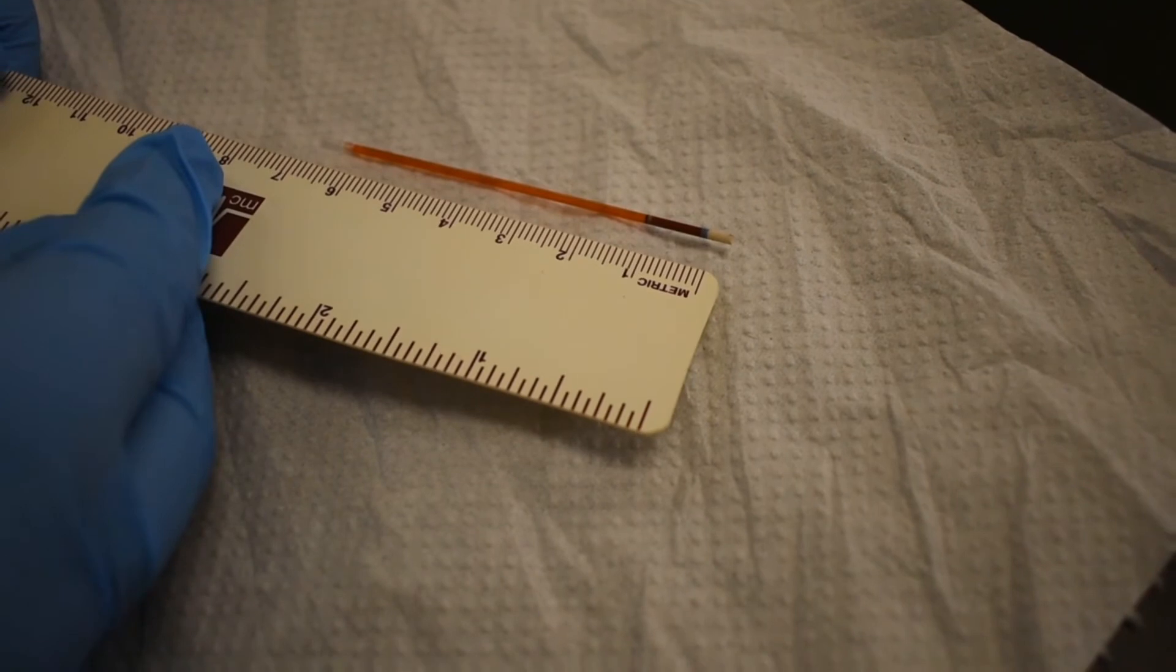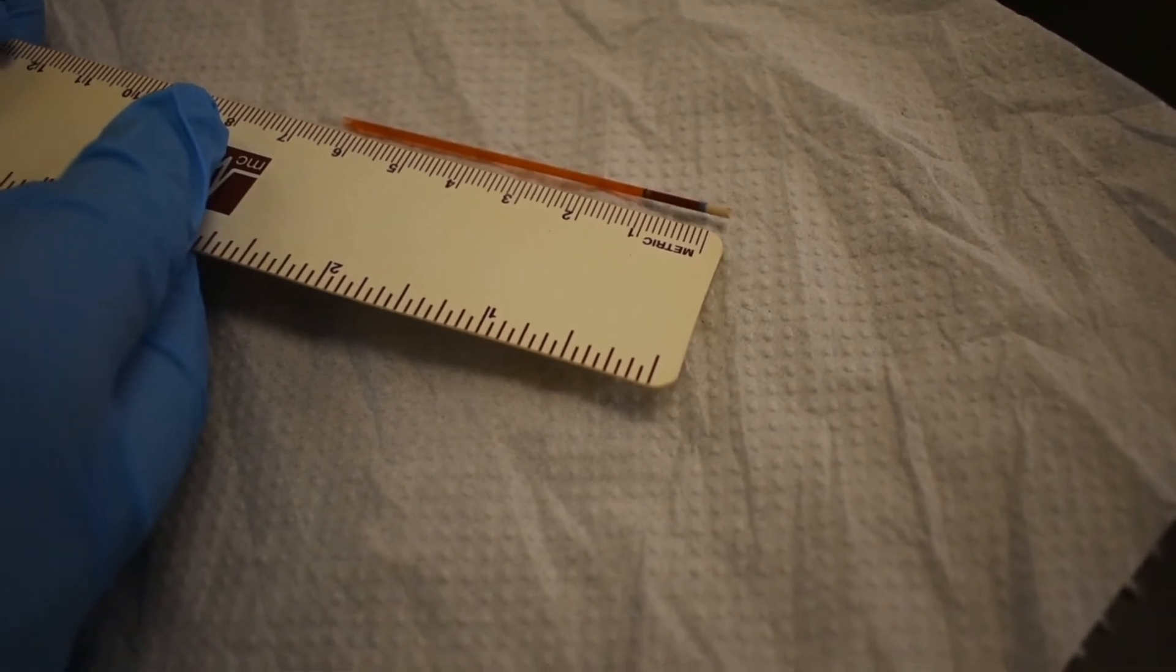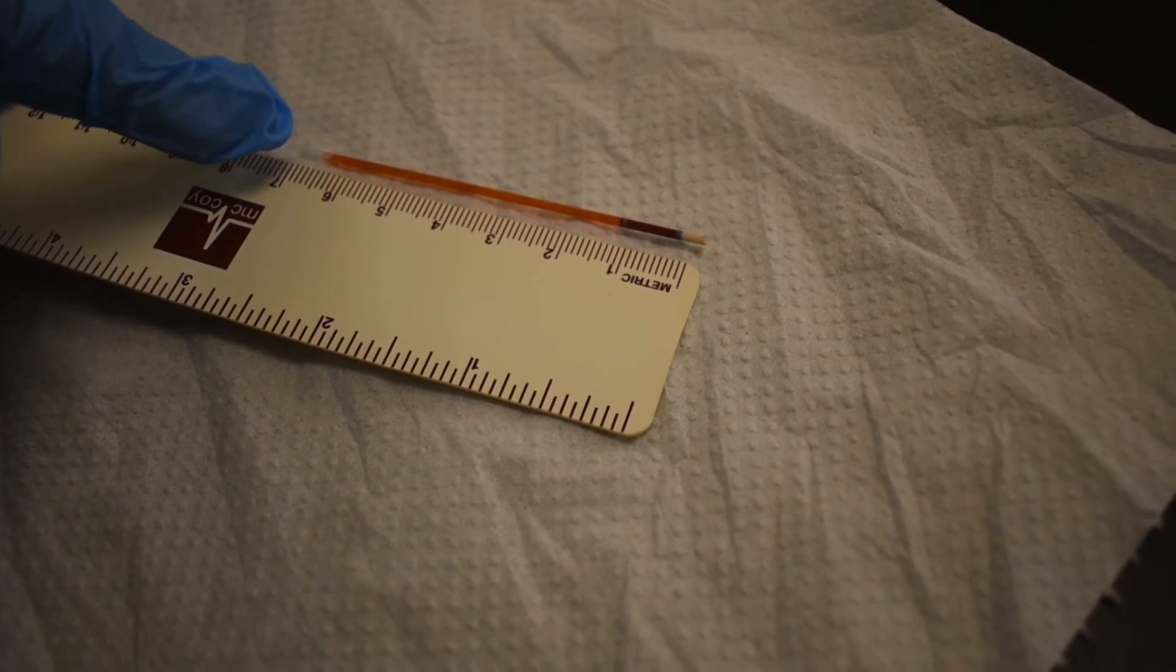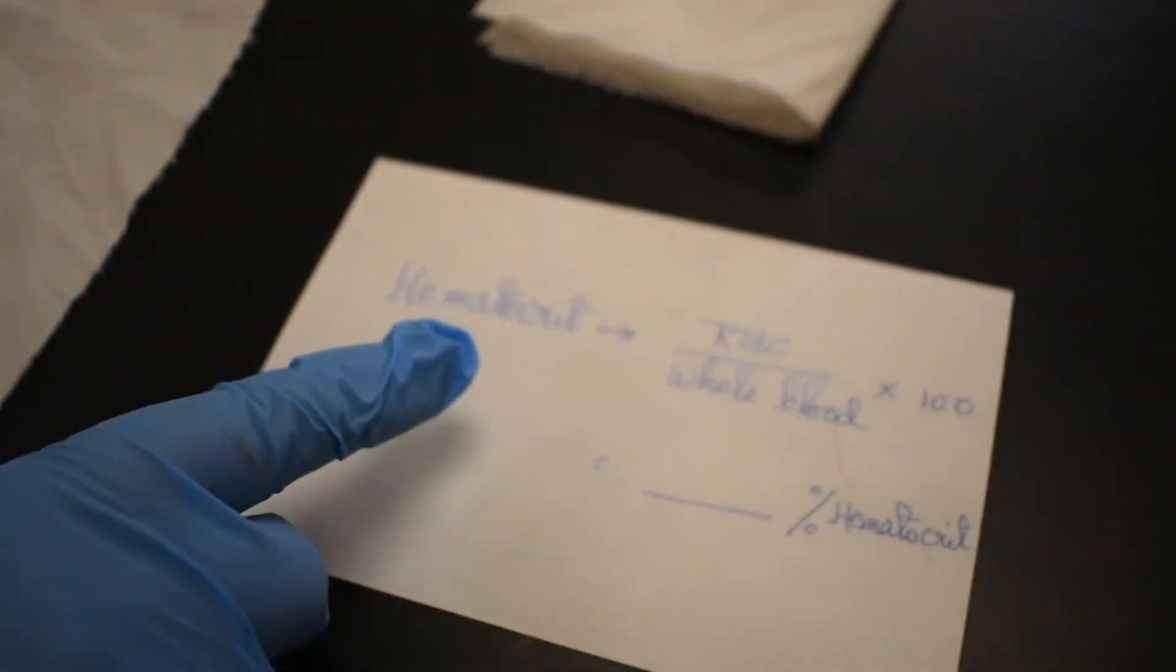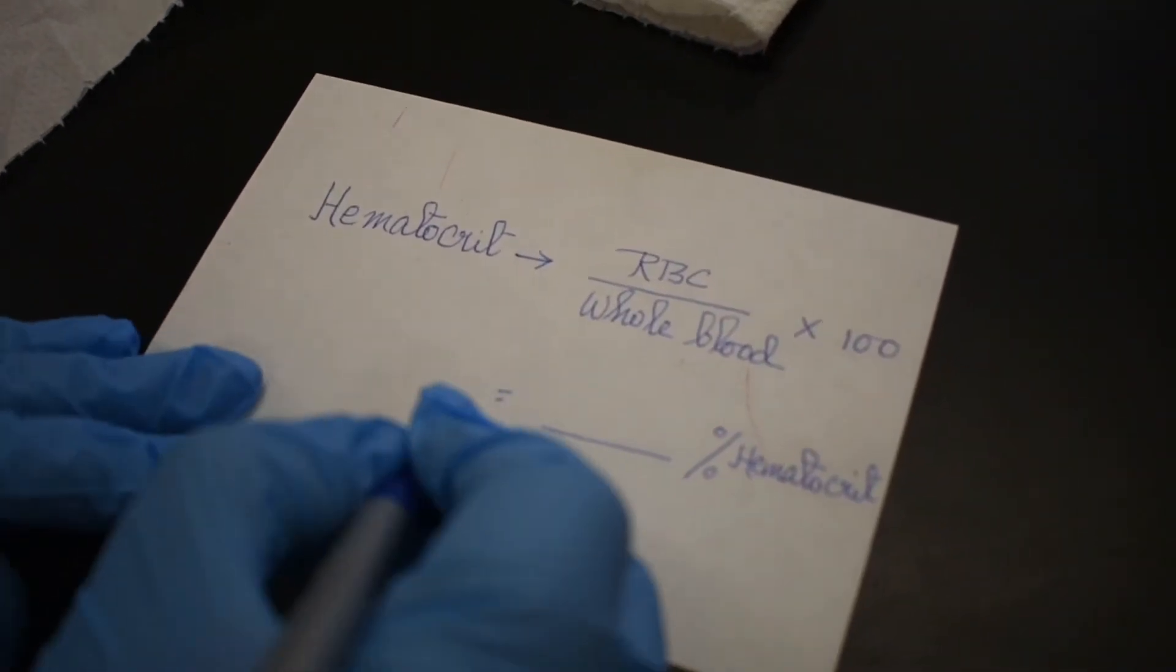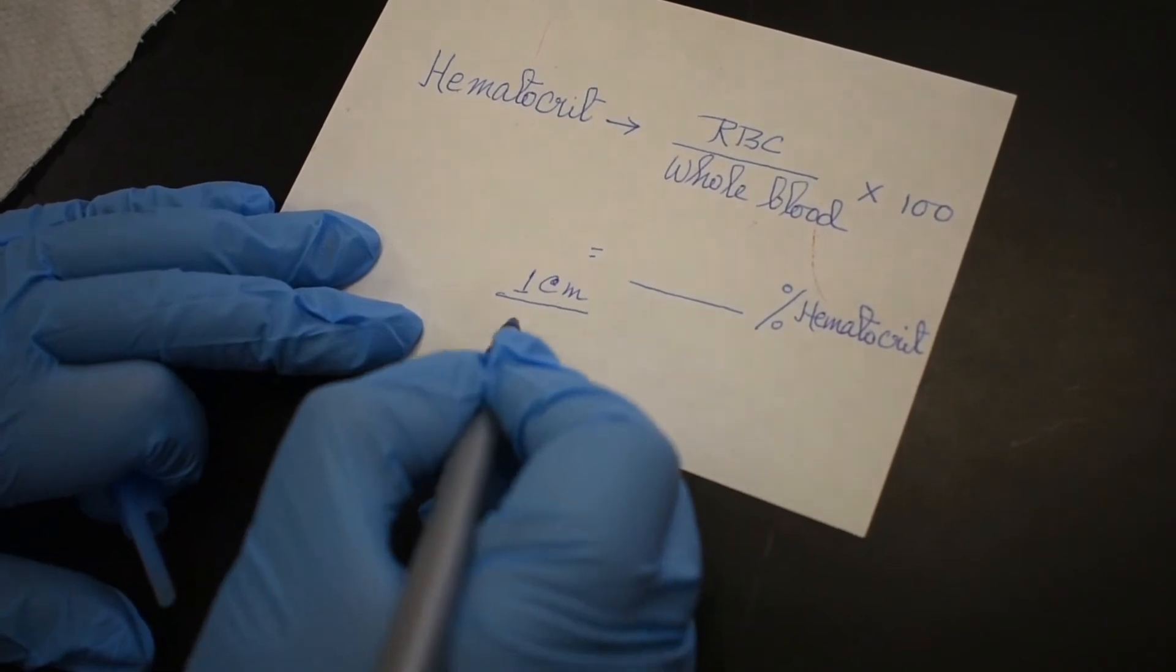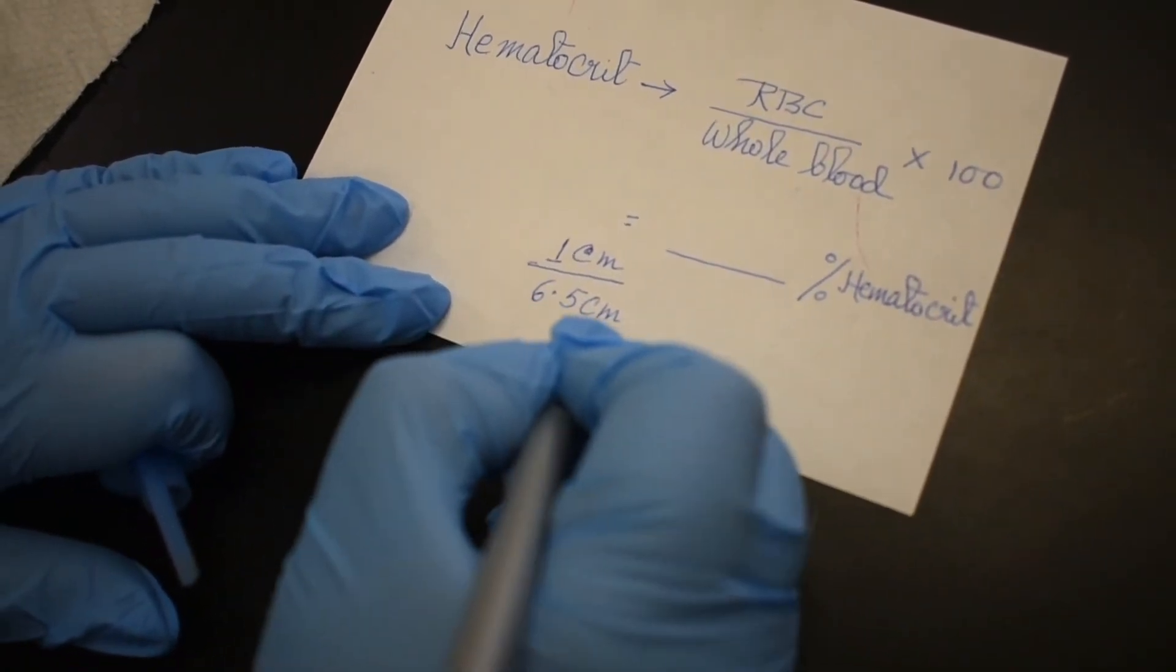Let's do the measurement now. So what we see, the red blood cell section is about one centimeter. And then for the plasma, I see it is about six point five, six point six centimeters. So now what we will do is punch those numbers in the formula. So we have red blood cell one centimeter over six point five centimeters for the whole blood sample.